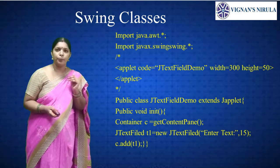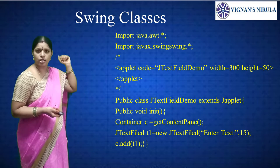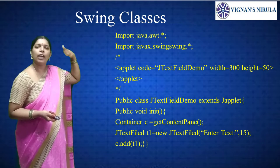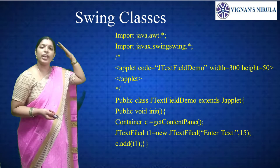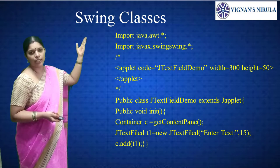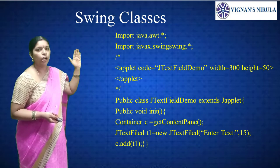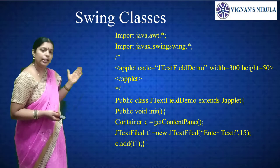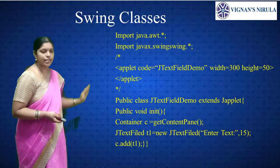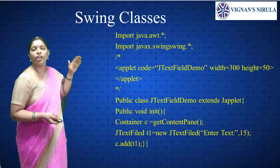Let's see another program. In every swing program, we must include import java.awt.* and import javax.swing.*. These packages are mandatory. The applet code is also mandatory: /* <applet code="JTextFieldDemo" width=300 height=50> </applet> */. The import statements and applet code are must-have for every swing program.